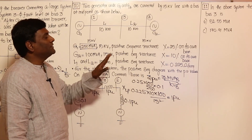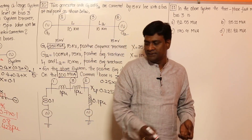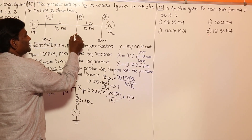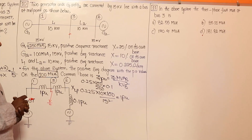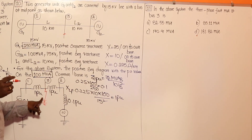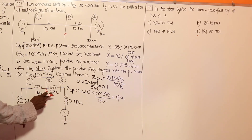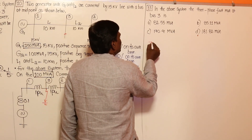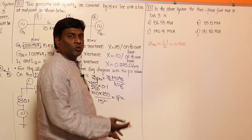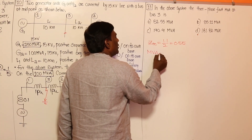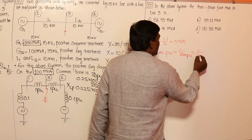The extended question asks for the three-phase fault MVA at Bus 3, which is at the midpoint of the transmission line. For Z-Thevenin at Bus 3, the two source impedances (0.1 + 1 = 1.1 per unit on each side) are connected in parallel: Z-Thevenin = 1.1 / 2 = 0.55 per unit. The short circuit MVA in per unit is 1 / Z-Thevenin = 1 / 0.55.